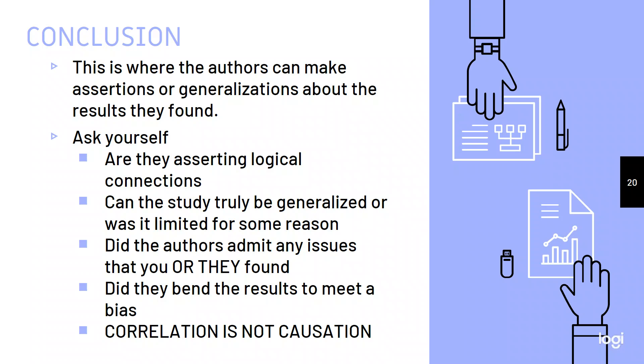Did the authors admit to any issues that you or they found? You could be reading a study and it's going to occur to you, nah, that ain't right. Did they actually address your issues as you saw it? Because again, you're talking to the text and you're asking questions the entire time. That's why we're going through this. It's not simply I'm accepting everything they did as truth and gospel. Did they bend the results to meet a bias? Did they change the language to make things sound better? And finally, are they using the proper language to discuss their results? We see a lot of people talking about correlation as though it is causation. And so you want to make sure that when they are talking, what they are concluding is actually true and valid to what their results are saying.